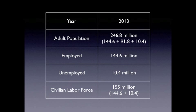The year is 2013. Adult population: 246.8 million — that is 144.6 plus 91.8 plus 10.4 million. Employed: 144.6 million. Unemployed: 10.4 million. Civilian labor force: 155 million, that is 144.6 plus 10.4 million.